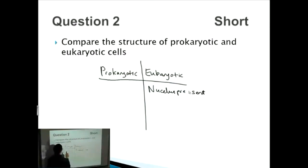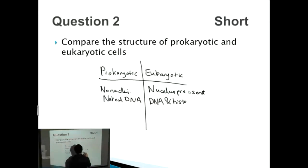For prokaryotic cells, they do not have nuclei, so no nuclei. What they do have, however, is naked DNA - remember how we talked about naked DNA where it's just DNA by itself with no proteins wrapping it around. Whereas eukaryotic cells, they do have protein binding as well, so it's DNA and histone proteins present.